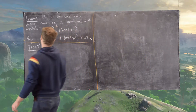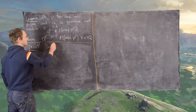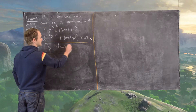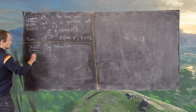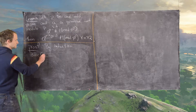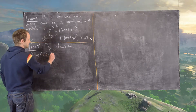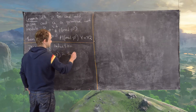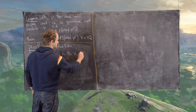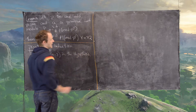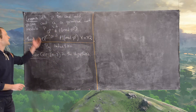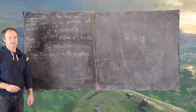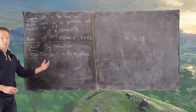We'll do this by induction. Notice that our base case, which is n equals 2, is in the hypothesis. Further, we know that we proved it was possible to have that in the hypothesis by the previous result.